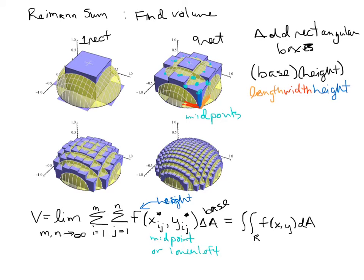Then, once we start to take m and n really big, what we're doing is we are creating, like this picture starts to do, infinitely many rectangles, in which case we get an exact area which can be represented by the integral.